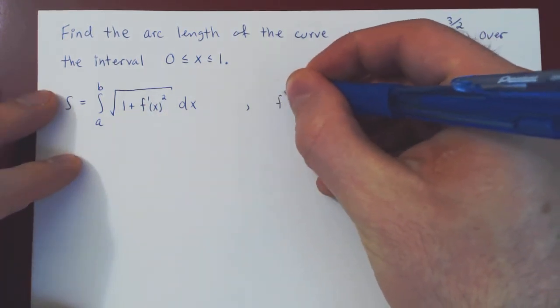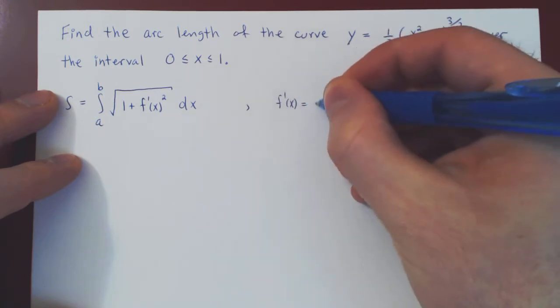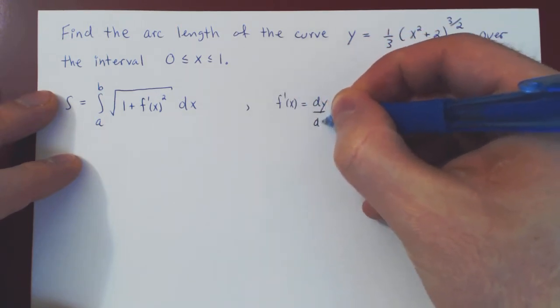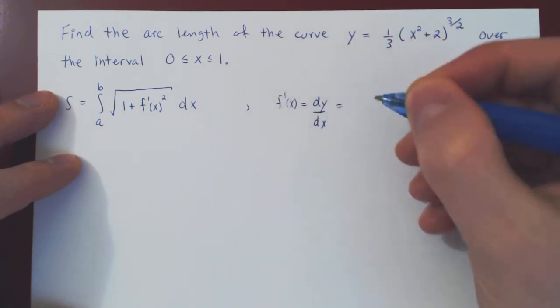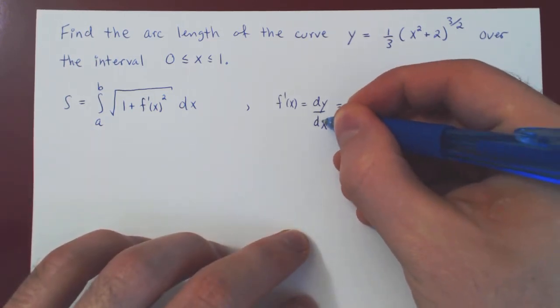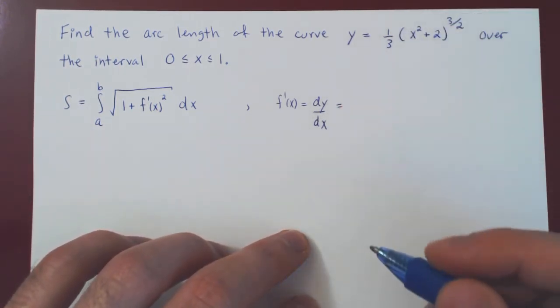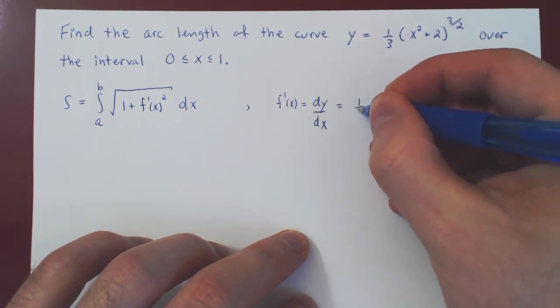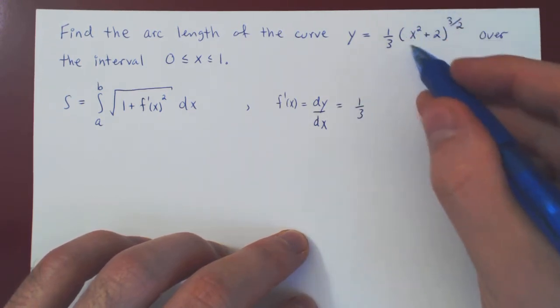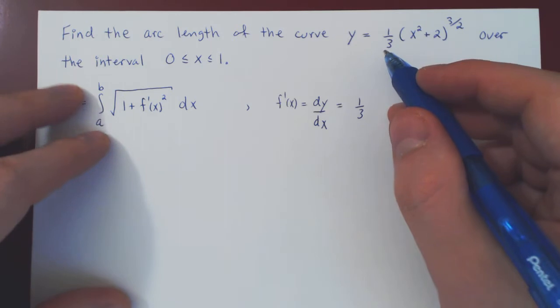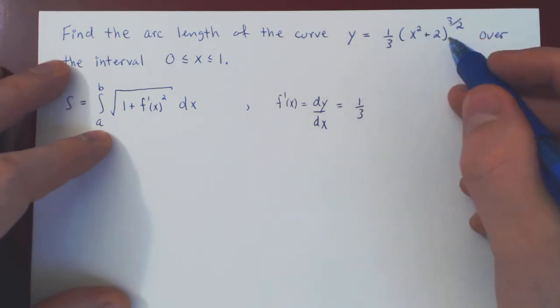Alright, so let's find our derivative. f prime of x, of course, if you want it's just dy over dx. So let's differentiate. 1 third is a constant multiple, so it stays there, times the derivative of this expression. We have a composition. We first square x, add 2, then take the power of 3 half.